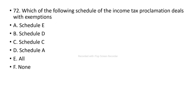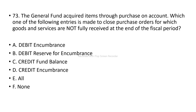Next question: which schedule of the income tax proclamation deals with exemptions? Schedule A covers employment income tax, Schedule B covers business income tax, Schedule C covers other income, and Schedule D covers other income types. Exemptions are addressed separately — Schedule E is the schedule that deals with exemptions.